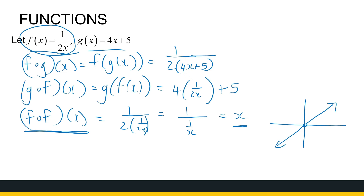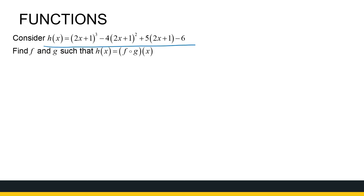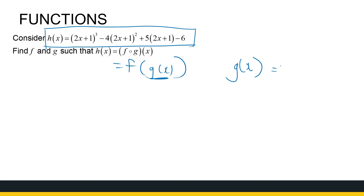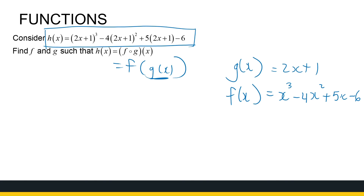Now I can look at composition from a different angle: given a composed function h, find the two functions f and g. h is f composition g, meaning f of g of x — so what function did I substitute into what? Looking at h of x, the inside function g of x is 2x plus 1, and the outside function f of x is something cubed minus 4 times that thing squared plus 5 times that thing minus 6. When we look at differentiation, it will be important to see composition of functions — that comes with the chain rule.